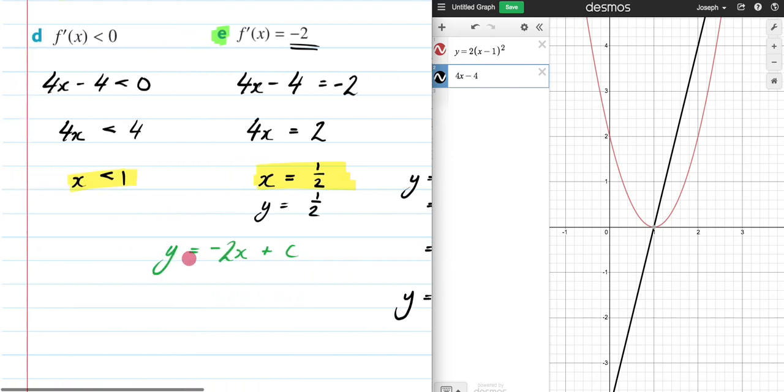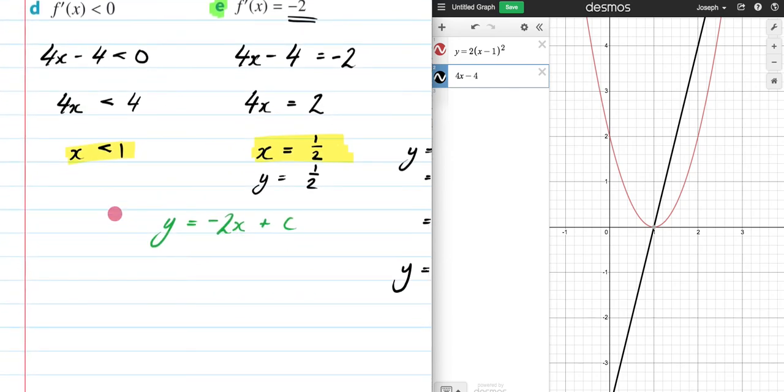Now that I've got both my x and my y, I can now sub those into this, into my tangent, in order to find what c is going to be. So it's going to be 1/2 here equals -2(1/2) plus c.